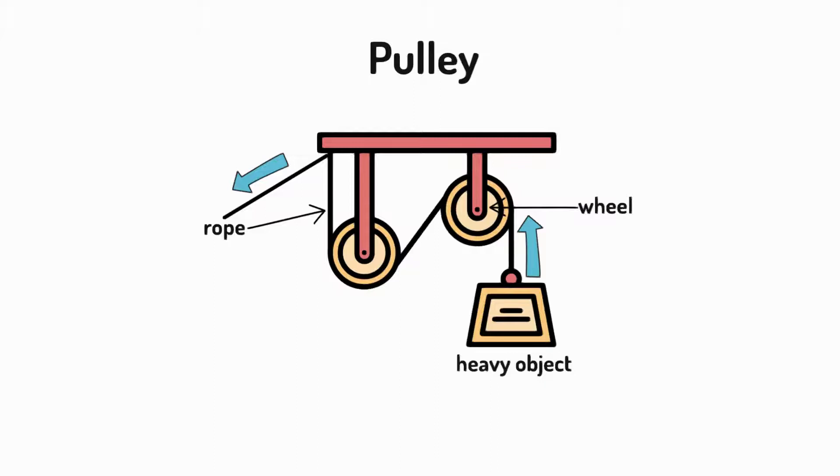By looping the rope over more wheels, you increase the upward force. This means you can lift heavy objects with the same amount of effort.